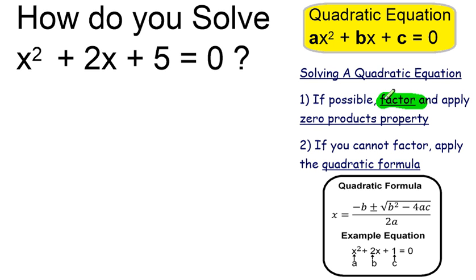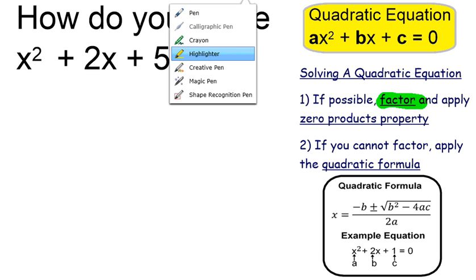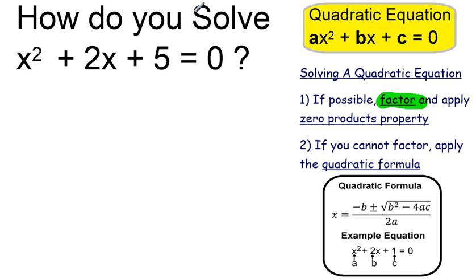So in this case, I'm going to look at the 5, my constant term, and I want to see if I have factors of 5 which add up to my x term here.